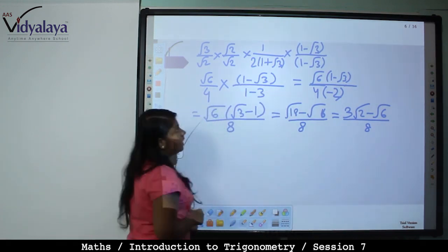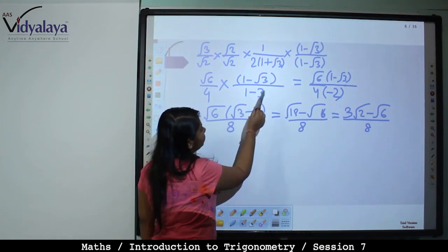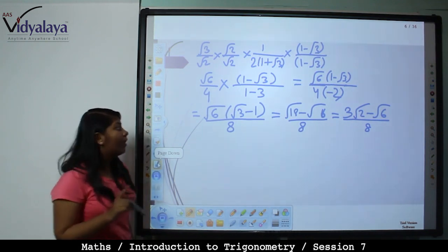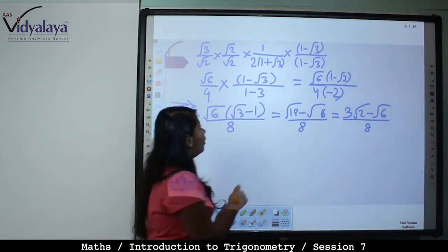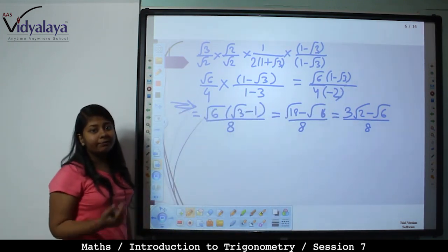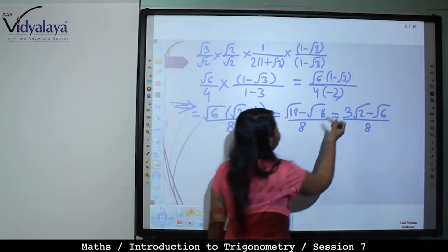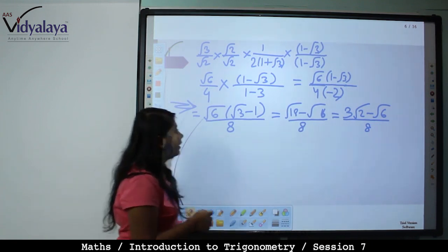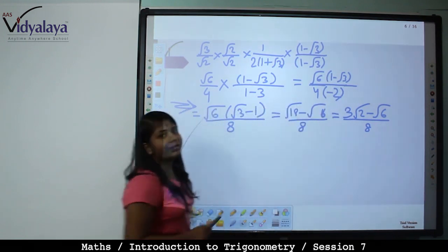Using a plus b into a minus b equals a square minus b square: 1 square minus root 3 whole square is 1 minus 3, that is minus 2. So we have root 6 into (1 minus root 3) upon 4 into minus 2. The denominator is negative, so change the numerator sign: minus 8 becomes plus 8 and 1 minus root 3 becomes root 3 minus 1.